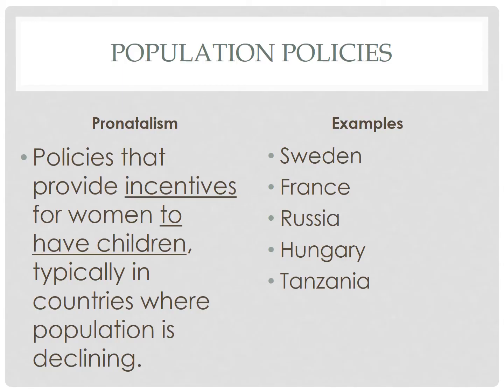Russia has increased childcare benefits and the length of maternity leave. And in 2007, one Russian province declared September 12th the National Day of Conception and parents got the day off of work to help increase the birth rate. The local government even gave couples prizes who gave birth nine months later. As a result, the birth rate on July 12th, 2008 was nearly four times the daily average.